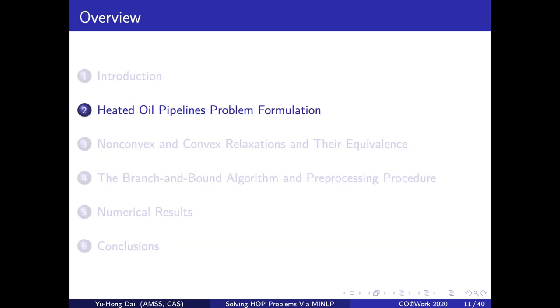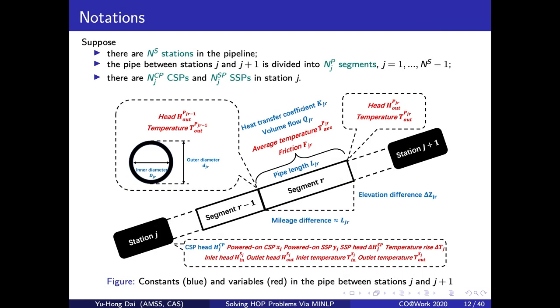Now I will give the MINLP formulation of the HOP problem. Suppose there are NS stations in the HOP. The pipe between each two stations is divided into NP segments. Also, there are NCP constant speed pumps and NSP shifted speed pumps. Other notations used in the model are given in this figure.